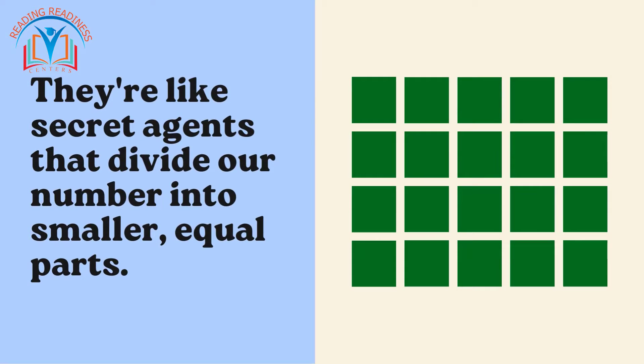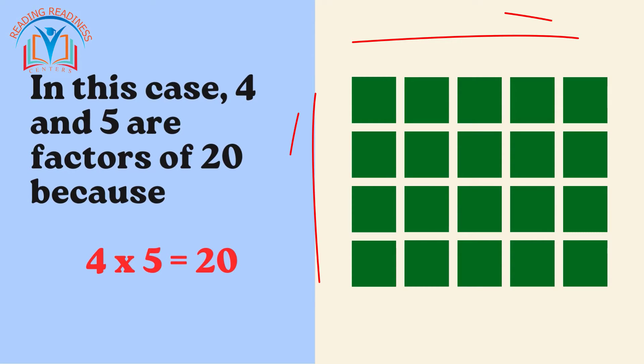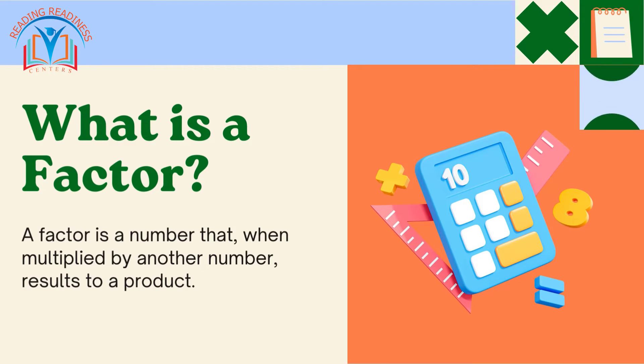They are like secret agents that divide our number into smaller, equal parts. In this case, 4 and 5 are factors of 20 because 4 times 5 is equal to 20. Now, what is a factor? A factor is a number that, when multiplied by another number, results to a product.